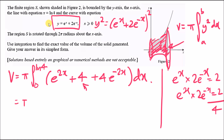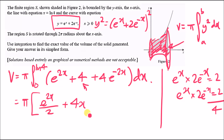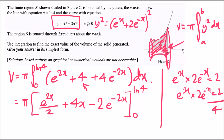Now integrate each term. e^(2x) integrates to e^(2x)/2. The constant 4 becomes 4x. And e^(-2x) integrates to minus 2e^(-2x). So the integrated expression is e^(2x)/2 + 4x − 2e^(−2x), evaluated from 0 to ln(4).